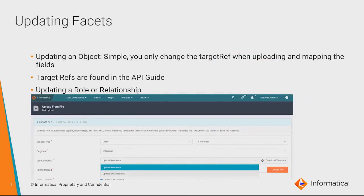I spoke about creating a facet in Axon, but you can also update it, and that's very similar to how it's done in Postman. If you recall in Axon, whenever you want to update an object, all you have to do is change the dropdown from "upload new items" to "update existing items." The same can be said of Postman — you just change the target reference from, for example, "system bulk create" to "system bulk update." Whichever ones can be updated in Axon can also be updated in Postman.